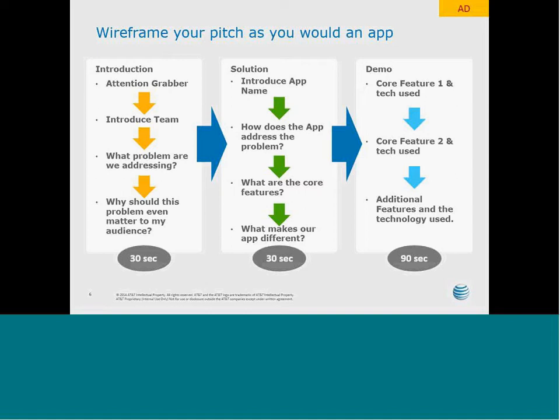After you're done with the first feature, go straight into the second one. As you do these, make sure you're highlighting what technology you used to build them, especially if it's sponsored technology. Once you get through those core features — in this example there's two, but you could have three or four — talk about additional features or what you're looking to do in the future. Your goal is to make it through the core features without running out of time; anything after that is additional.